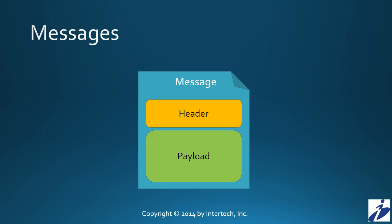A message in spring integration is a pretty simple structure. It's comprised of two portions: the header and the payload. The header of a message contains what I'll call system information — for example, it contains the timestamp of when the message was created. The payload, on the other hand, contains the data or event that's trying to be exchanged inside of the spring integration environment. In the last application example, the payload would contain that contact data being exchanged between applications.